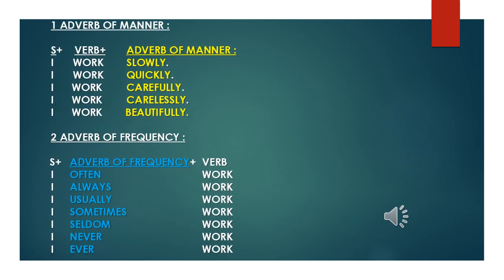Slide three, Smurf. We will discuss about the adverb of manner — kata keterangan cara. I walk. How do you walk? I walk slowly. I walk quickly. I walk carefully. I walk carelessly. I walk beautifully.